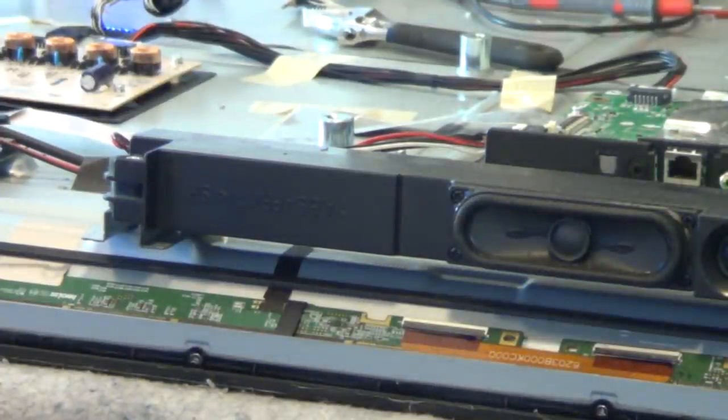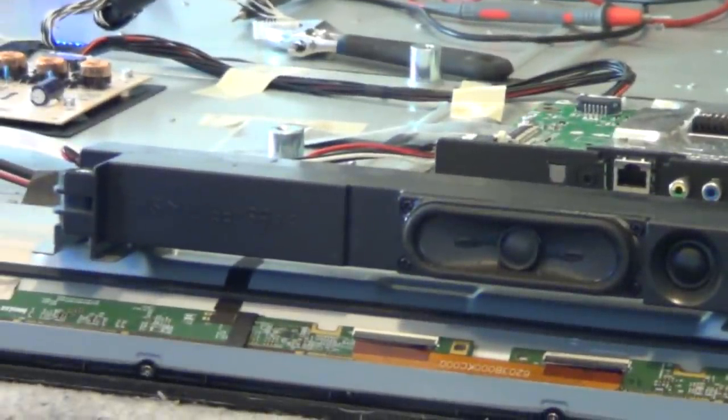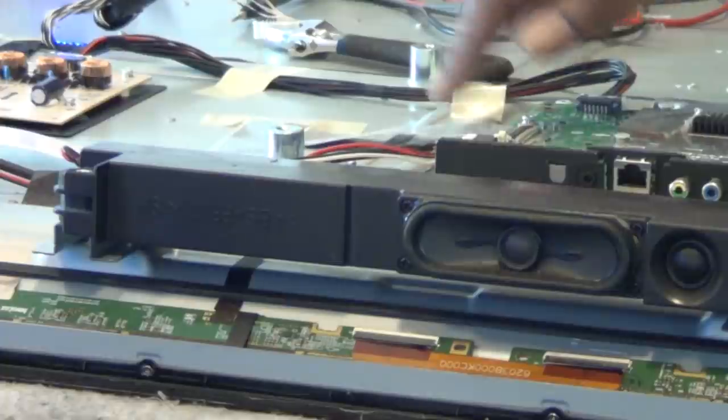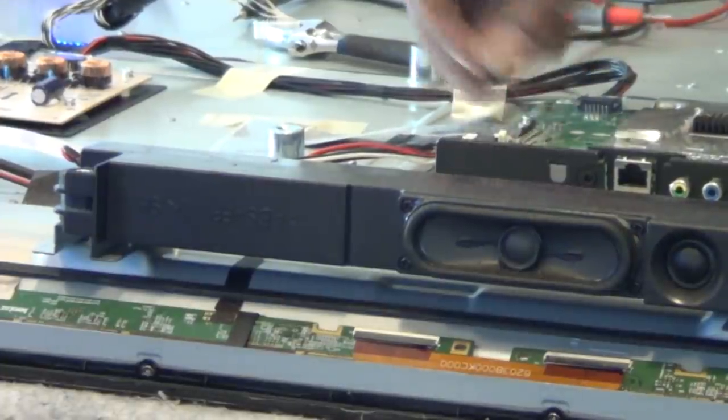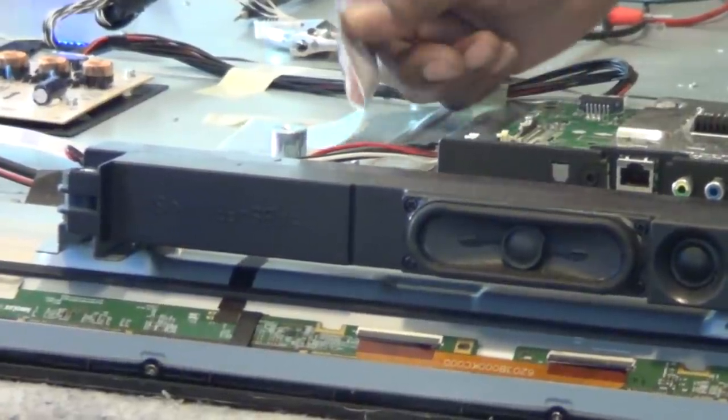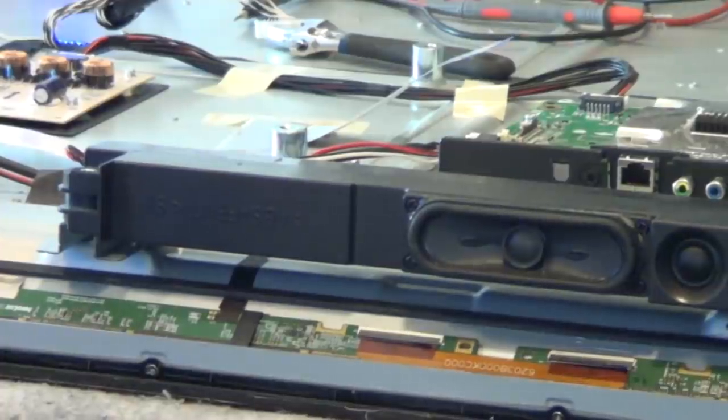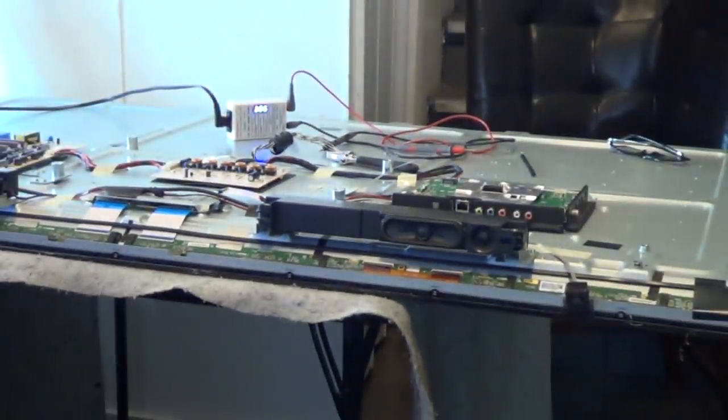First thing we'll do is remove our outer bezel. All the screws around the black outer bezel need to come off. I believe they're on all sides. And at first, as usual, I'll always disconnect my LVDS cable from the main board, just make sure that there's no current going through that and I won't forget in the future.